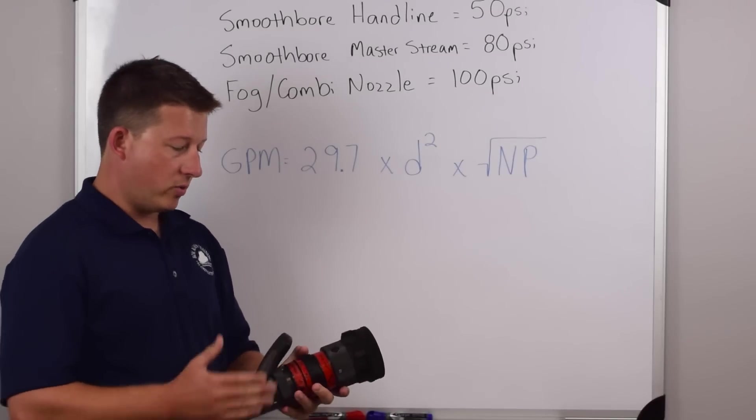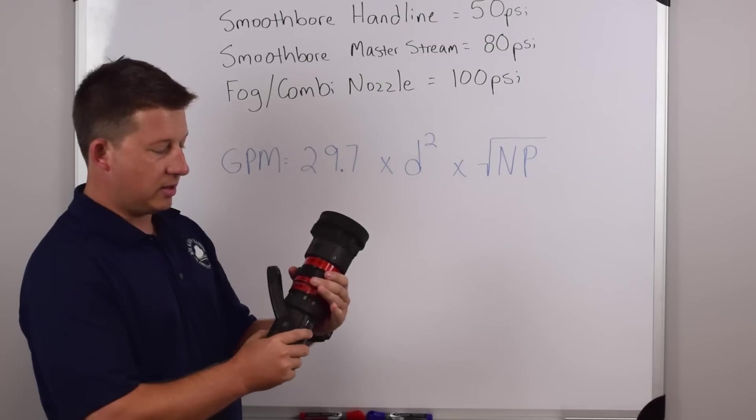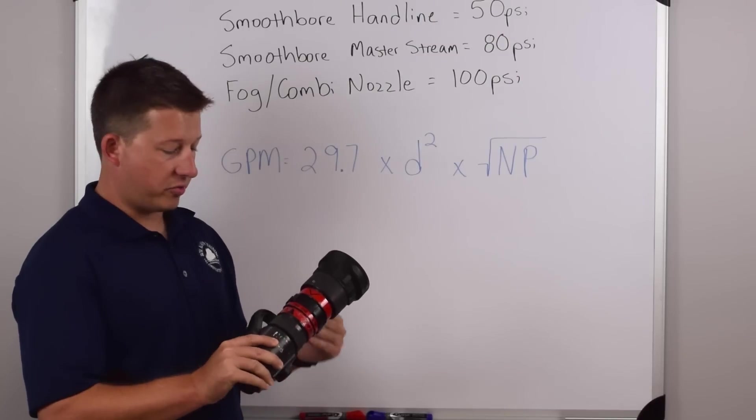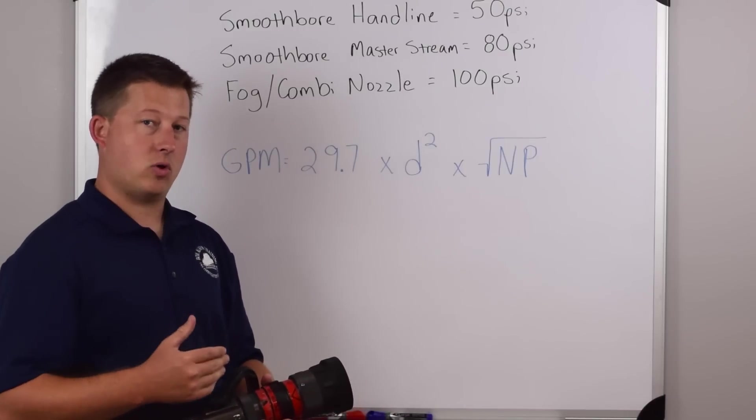Going to the fog nozzle, we don't have to calculate the opening and how much water is moving through it, because this dial is going to tell us when we switch from 30 to 60, 95, 125, 150, 200, whatever setting that we're on.